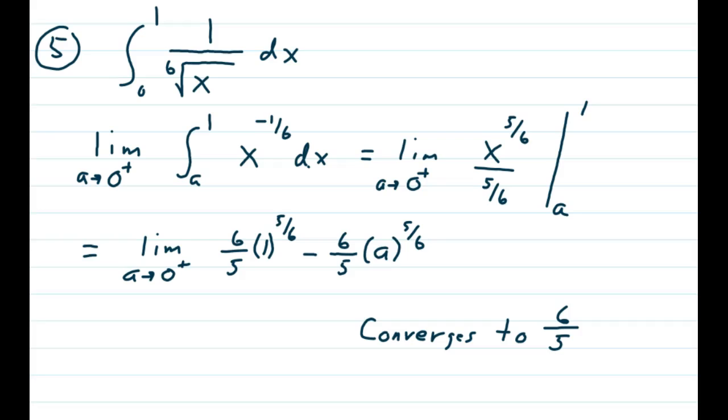And as A approaches 0, the second fraction disappears. So we have an improper integral converging to 6/5ths.